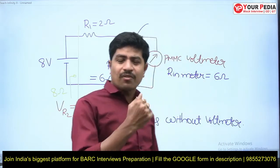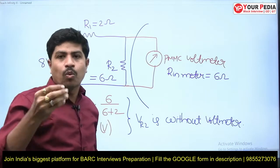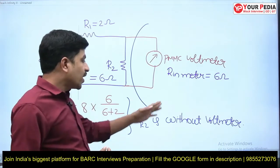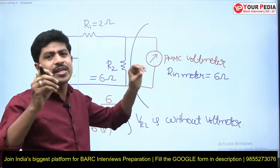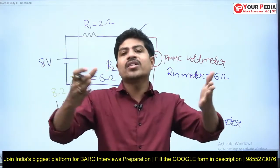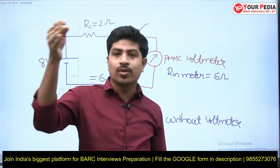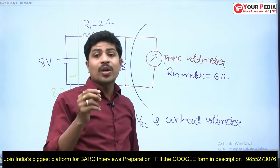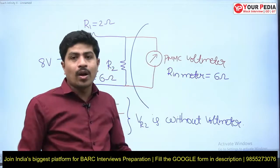Without the meter the value is correct; with the meter the value is wrong. The purpose of the meter is to measure the value, not to change the circuit condition. But as soon as I introduced the meter into the circuit, the entire circuit condition got changed. This is called the loading effect: as and when a meter is introduced into the circuit, the entire circuit condition will get altered because of that meter's internal resistance.